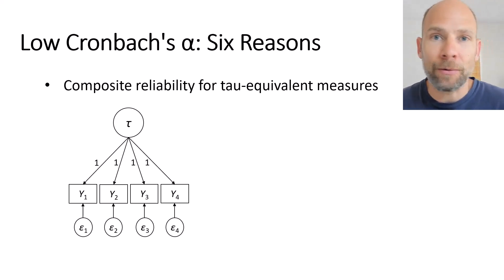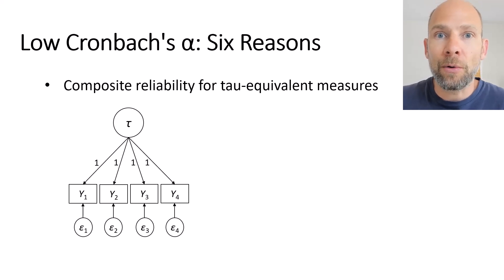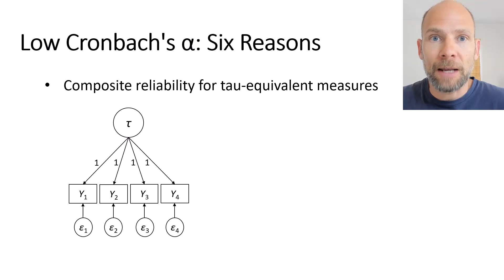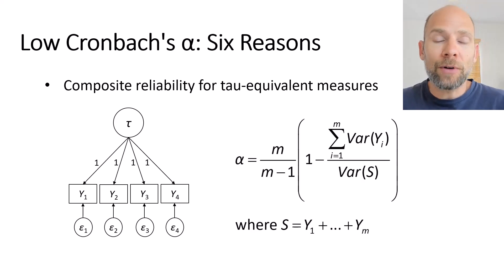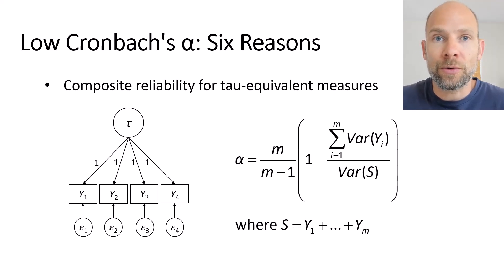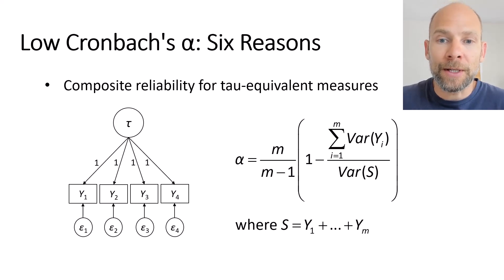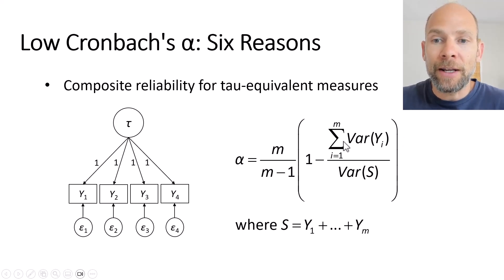This is something many people don't realize, and we'll return to it when discussing the six reasons, because one reason for a low Cronbach's alpha can be that the tau equivalence measurement model does not apply. The Cronbach's alpha formula is not super intuitive, but you can see that what goes into it are m tests — the number of components — and the variances of the individual components in the numerator, specifically the sum of the variances.